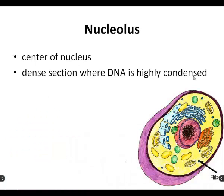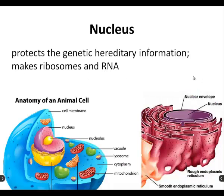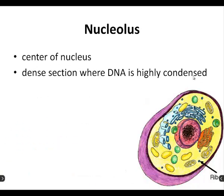Next up is the nucleolus — not the same as nucleus, look at the spelling. This is the nucleolus. It's the center of the nucleus, and it's the section where the DNA is really condensed. If you think of the filing cabinet as the nucleus, the nucleolus is like all the files pushed back in the corner. Not really technically an organelle, but you'll put it on your worksheet. Probably just check eukaryotes, because prokaryotes don't have a nucleus at all.